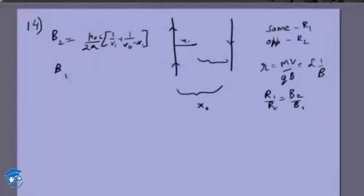B1, when they are in the same direction, the current will be opposite, so it will be μ0I over 2π times (1/x1 minus 1/(x0 minus x1)). We don't actually need to worry about the sign because radius depends on magnitude.